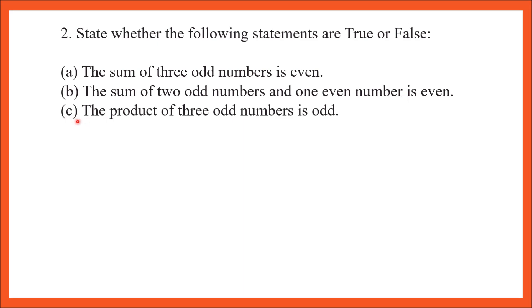Part C: the product of 3 odd numbers is odd. To check, I took 3 odd numbers: 1, 3, and 5. 1 multiplied by 3 is 3, and 3 multiplied by 5 is 15. Yes, 15 is an odd number, so this statement is true.